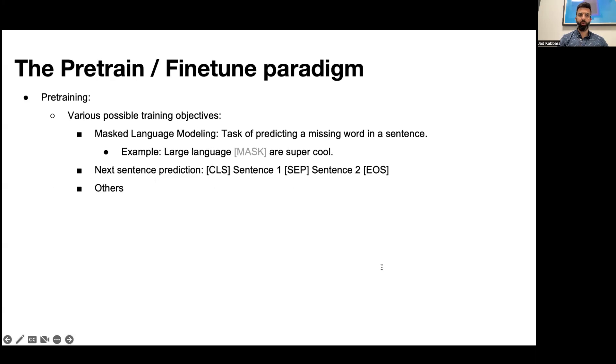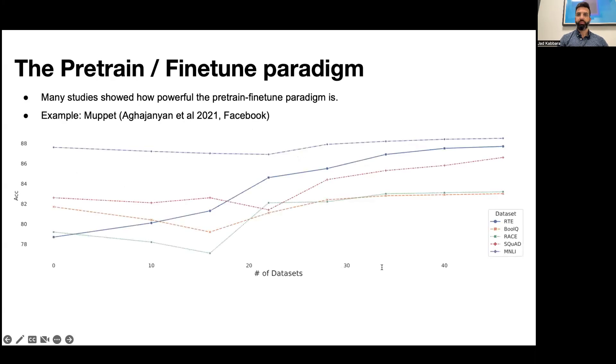Essentially we are getting the model to learn that the missing word here is models and then to fill in that word. Another popular training objective is for example next sentence prediction.